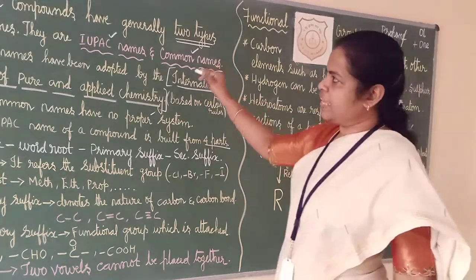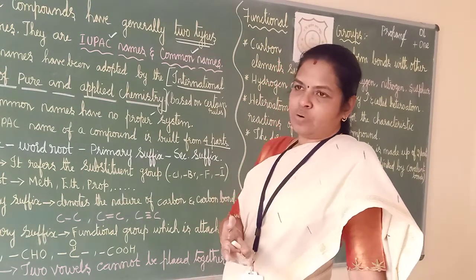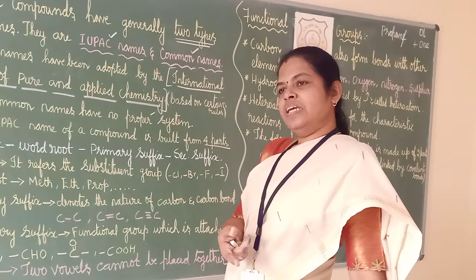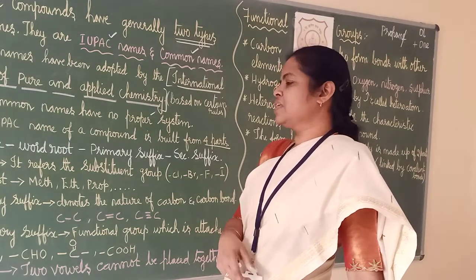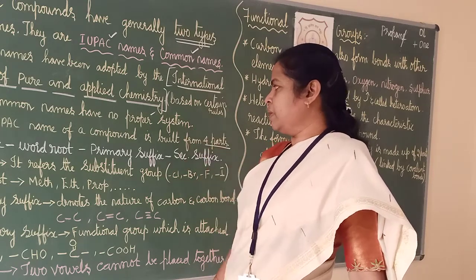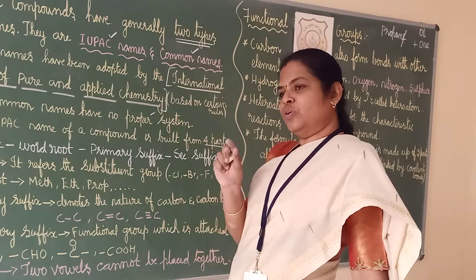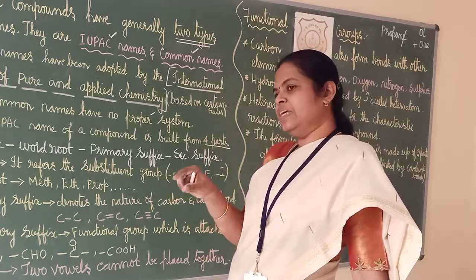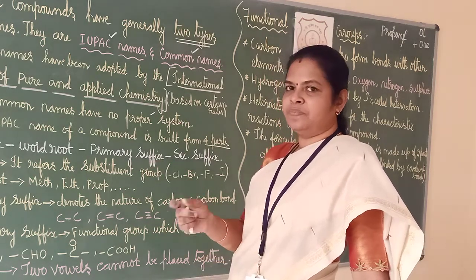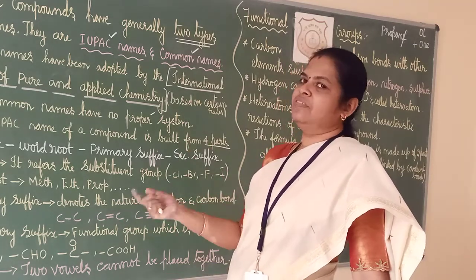Before studying functional groups, one recap of nomenclature: two names are there — IUPAC name and common name. IUPAC name is by International Union of Pure and Applied Chemistry, based on some rules. Common names have no proper system. IUPAC name has four parts: prefix, word root, primary suffix, and secondary suffix. When adding suffixes, two vowels should not be together — if so, strike one and then add.